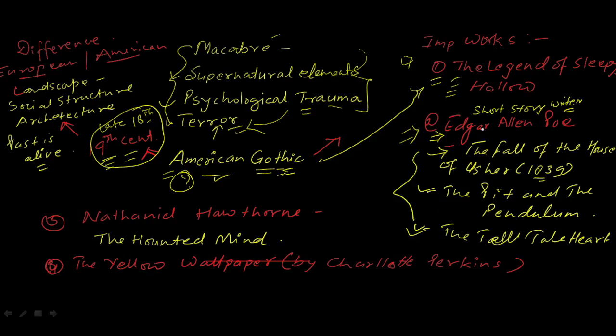These are important works by Edgar Allan Poe. Next important writer is Nathaniel Hawthorne—The Haunted Mind is the work by this writer. And if you are studying Gothic literature, these questions can be asked. The Yellow Wallpaper is by Charlotte Perkins.